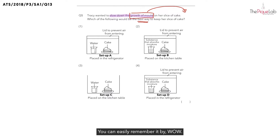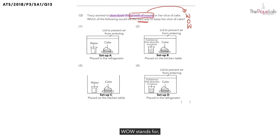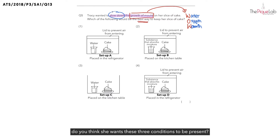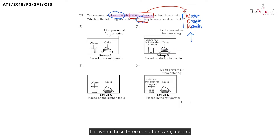You can easily remember it by WOW. What does WOW stand for? WOW stands for water, oxygen and warmth. So this means that in order for mold to grow, it would require water, oxygen and warmth. So if Tracy wanted to slow down the growth of mold, do you think she wants these 3 conditions to be present? Of course not. So what do you think is the best way to keep her cake? The best way to keep her cake is when these 3 conditions are absent.